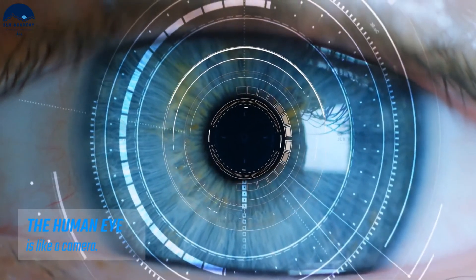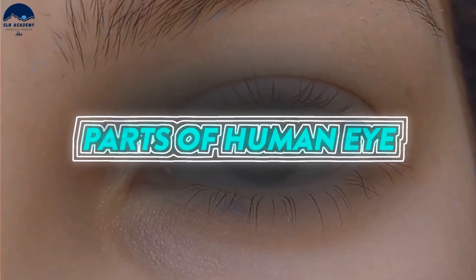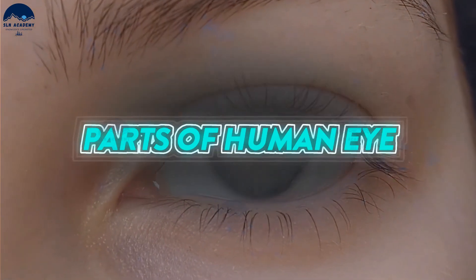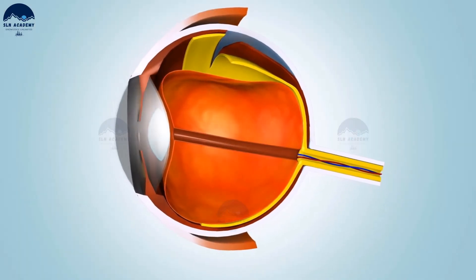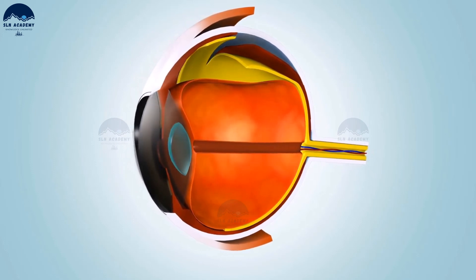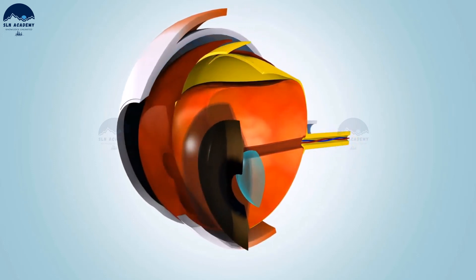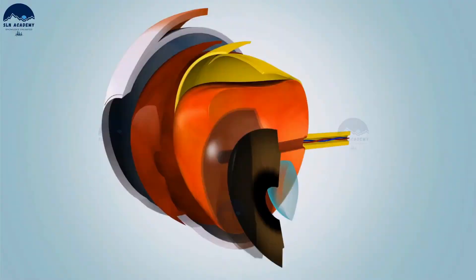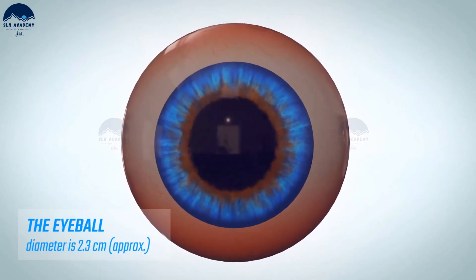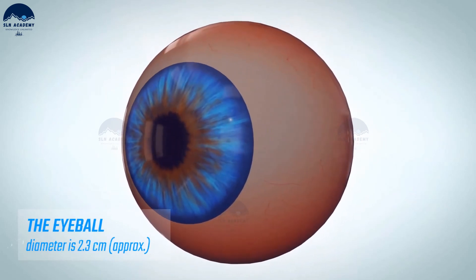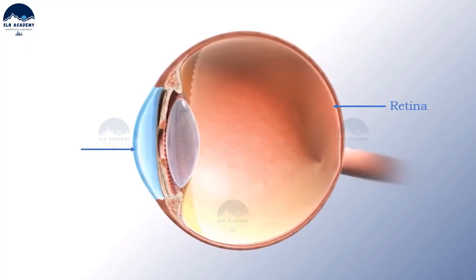Light enters the eye through a thin membrane called the cornea, which forms the transparent bulge on the front surface of the eyeball. The eyeball is approximately spherical in shape with a diameter of about 2.3 centimeters.